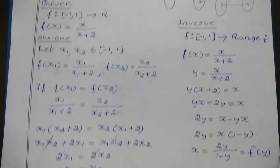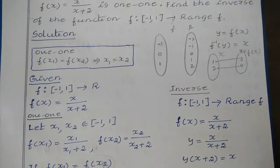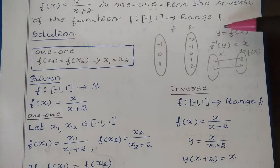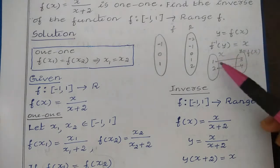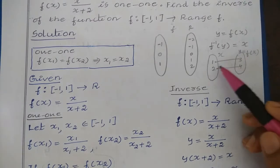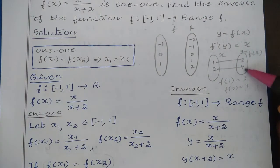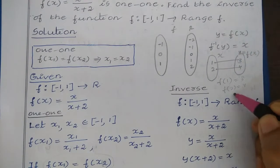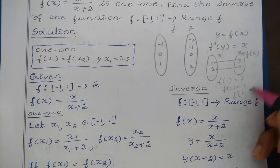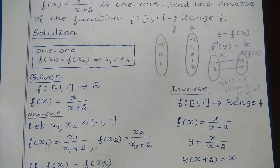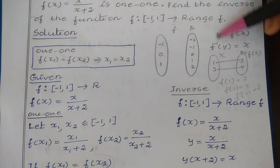Next, they have asked us to find the inverse of the function. Generally, if y is equal to f of x and f of 1 is equal to 3, then f inverse of 3 is equal to 1. When we find the inverse, the co-domain becomes the domain and the domain becomes the range. So if y is equal to f of x, then the inverse is f inverse of y is equal to x.